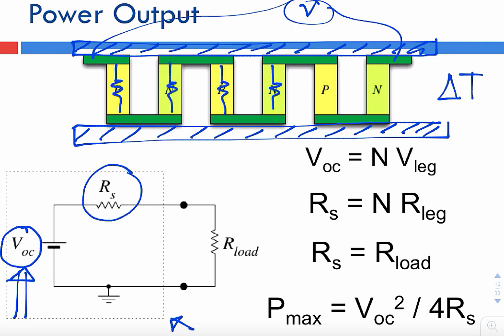The resistance R sub S is nothing but the total resistance of the thermoelectric legs. These rectangular legs are actually resistors — they have some resistivity, some length, some cross-sectional area. I can calculate the electrical resistance of each leg using the standard formula: electrical resistivity times length divided by cross-sectional area. Because these legs are electrically in series, the total resistance is the sum of all those resistances.